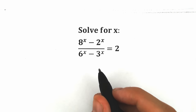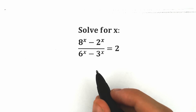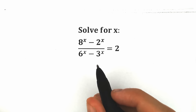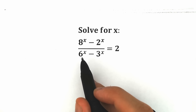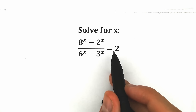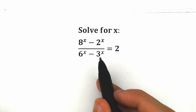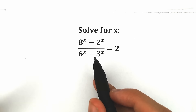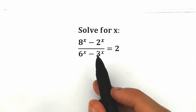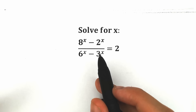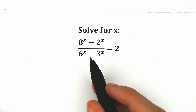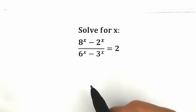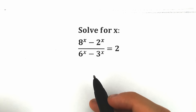Hello everyone! Happy to see you here on my channel. I'm Mathematics, and today we have a really great exponential equation: (8^x - 2^x) / (6^x - 3^x) = 2. Maybe a lot of students are saying they can easily solve this by inspection, but in terms of math, we're interested in a formal solution. So let's solve this step by step.